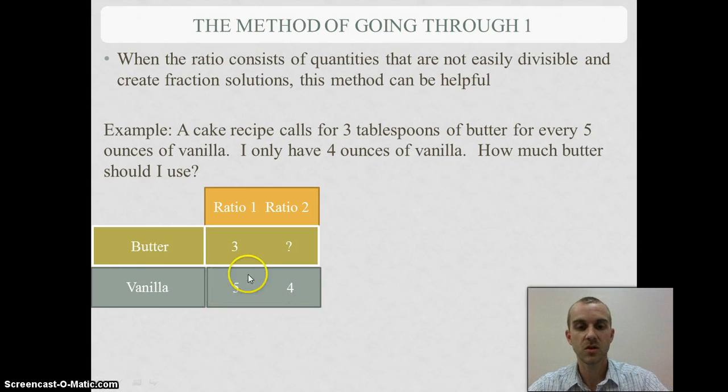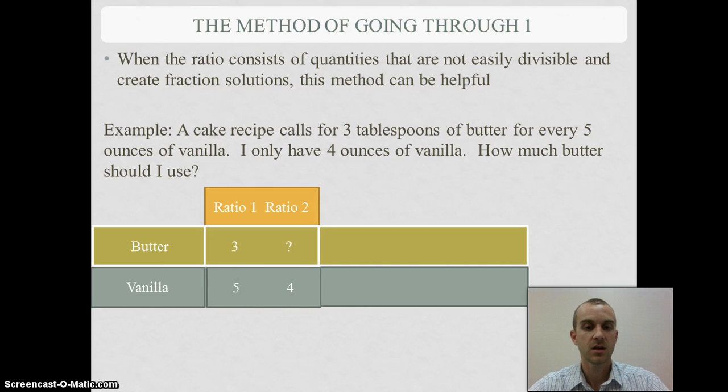One way I could do that is to go through 1, and I'm going to use the 2 quantities I know across the ratio. What I can say is first I want to get down to 1. How can I convert 5 into 1? Well, I divide by 5. And now how do I make 1 come up to 4? I multiply by 4. What I'm going to do is follow that same pattern to get to my question mark.